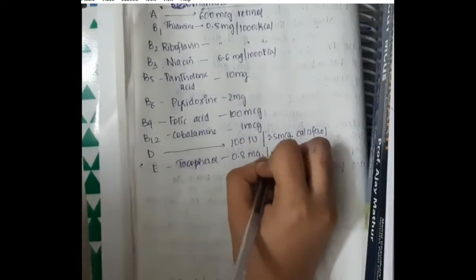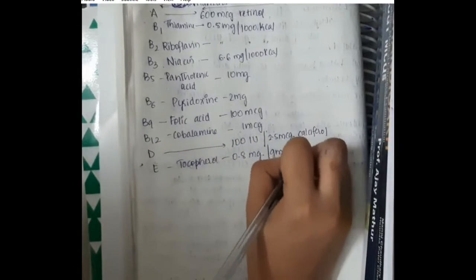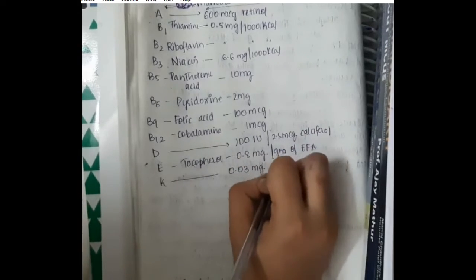Vitamin E, RDA is 0.8 mg per gram. For Vitamin K, it is 0.03 mg per kg.